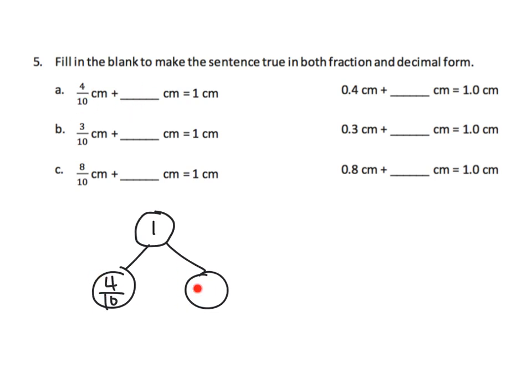The idea is: what is this missing part here to equal one whole? The idea is that is six tenths, because four tenths plus six tenths equals ten tenths, and that's our one whole.